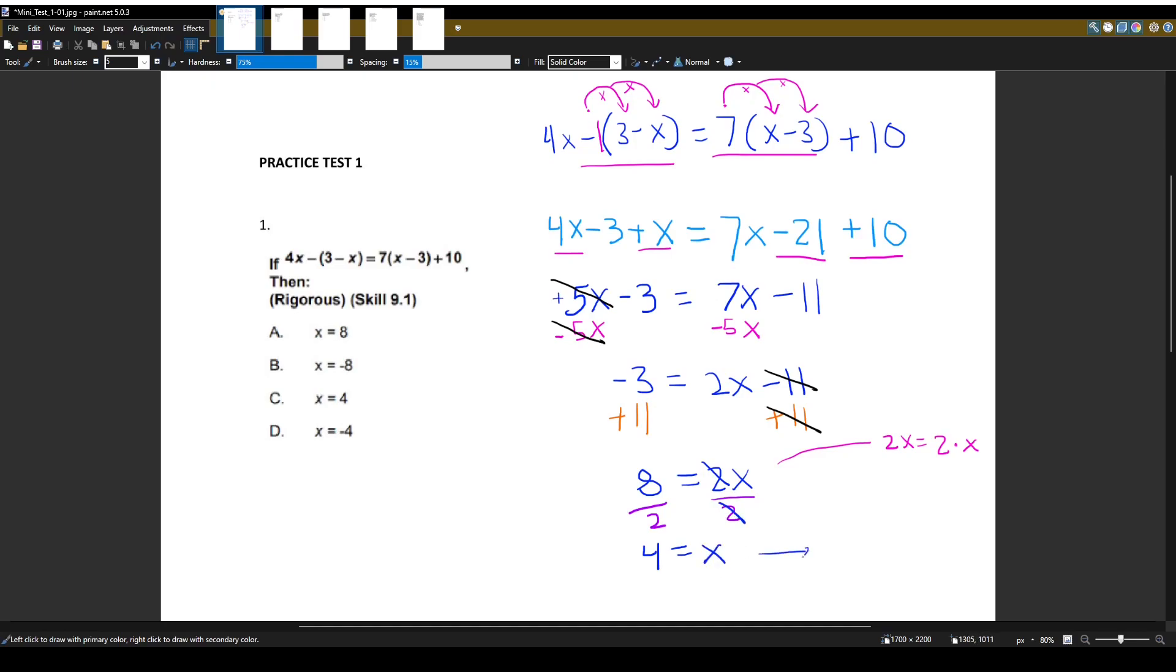Or, which is the same thing as, x is equal to 4. And which one of our choices is x equal to 4? That is C. x is equal to 4. Hopefully, all those steps made sense.